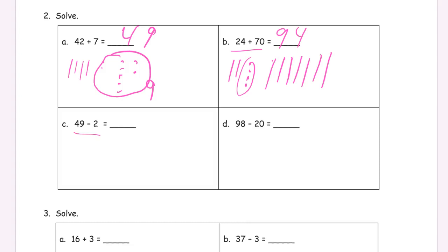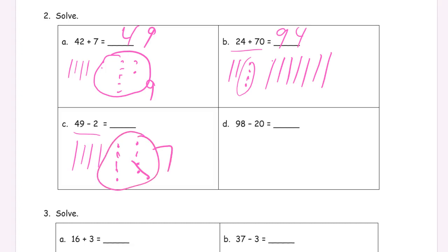49 minus two. It's going to look a lot like the first problem because now we're going to cross out — this is subtraction. So we have four tens and one, two, three, four, five, six, seven, eight, nine ones. And I'm going to cross out two of these. I had nine ones here, now I only have seven ones left. So I have the four tens — that's 40 — and then seven ones, 47.